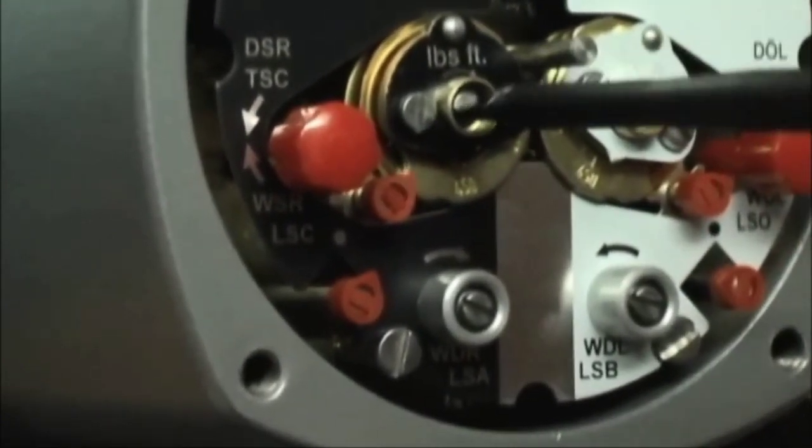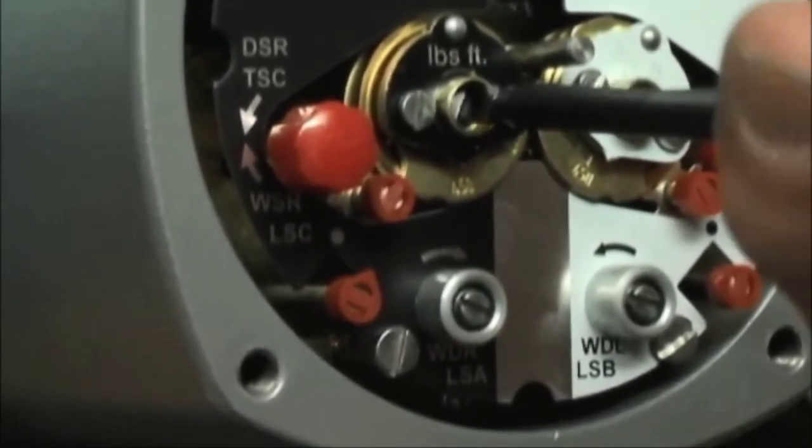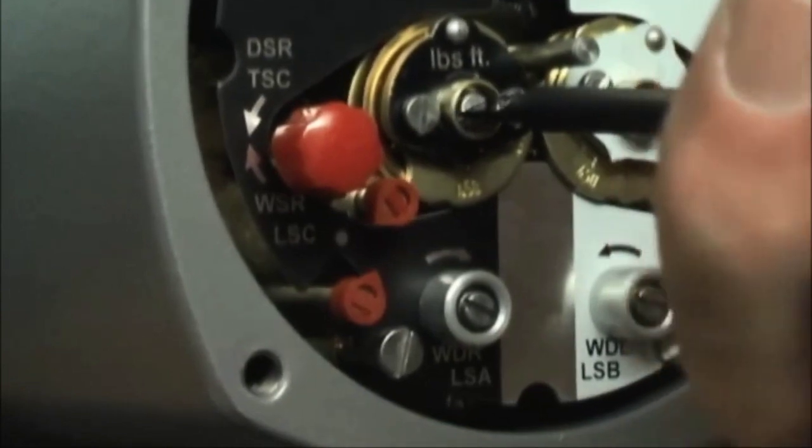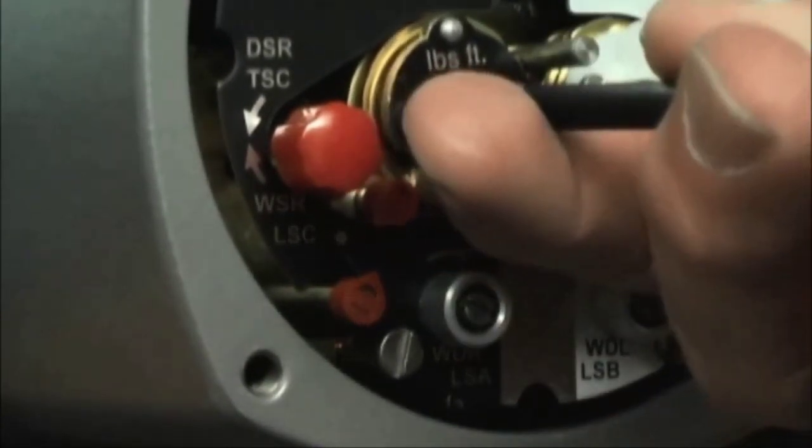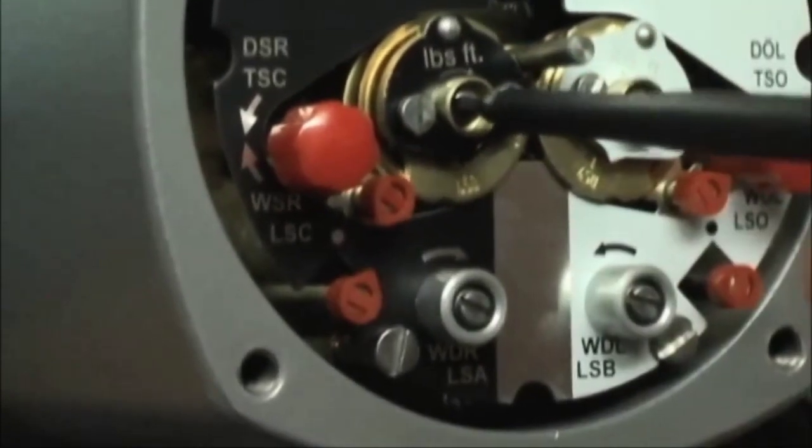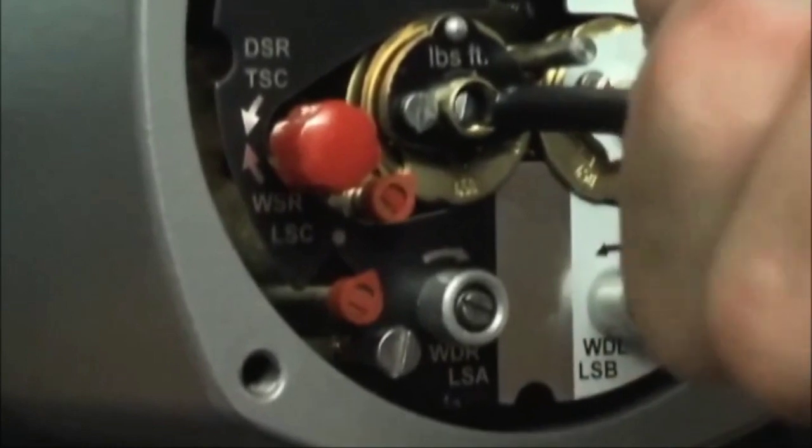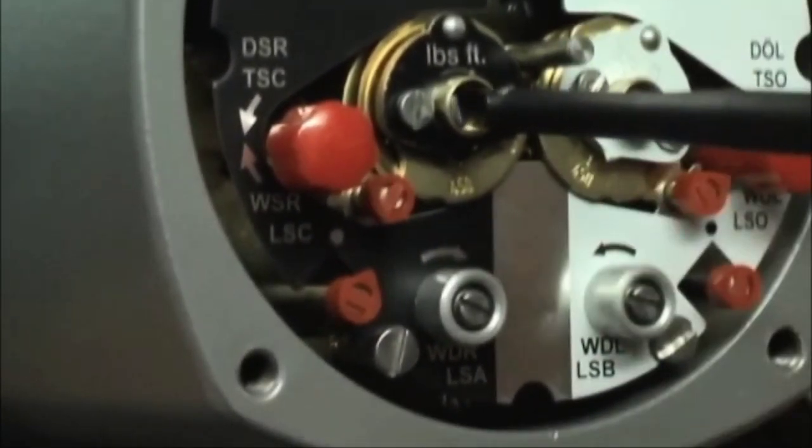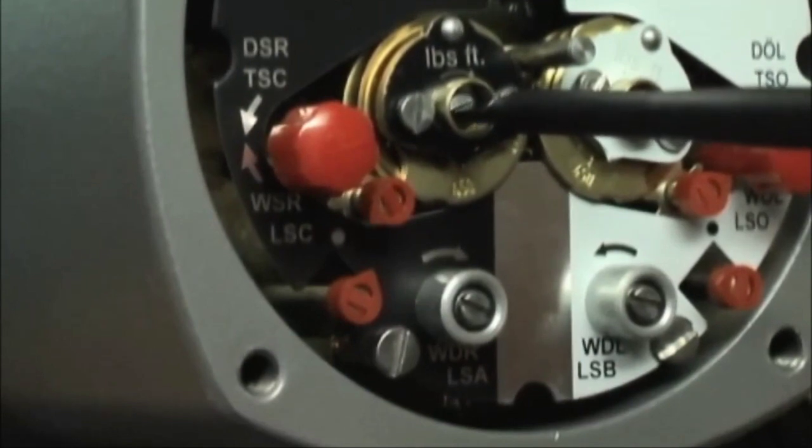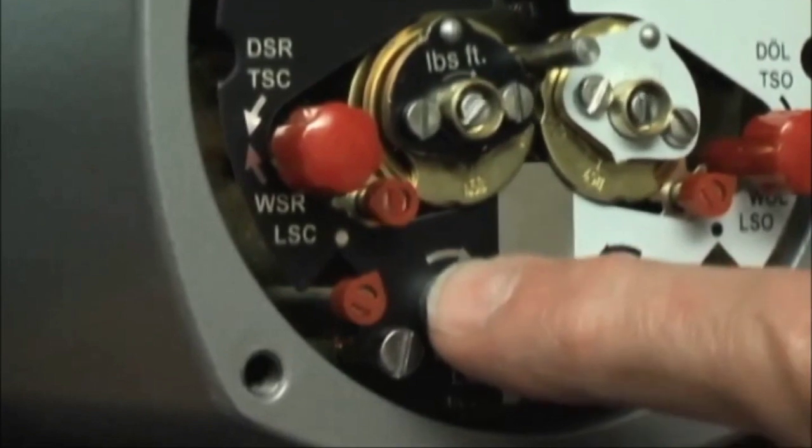For every turn of the screwdriver, my pointer will rotate 90 degrees, and I'm going to bring it around just till it points towards the trip mark. If I should inadvertently go one or two clicks too far, just bring it all the way back around again and immediately stop turning on the trip mark. I will check my switch setting using my hand wheel.